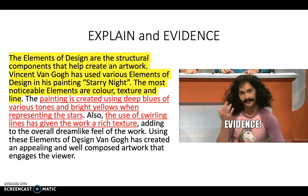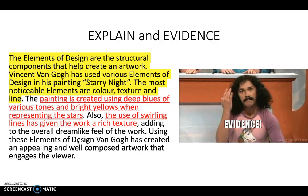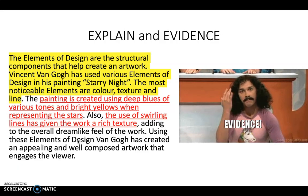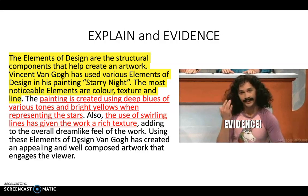Now, explain and evidence. What I've got highlighted is my topic sentence. When you're explaining, you're giving examples from the artwork and how they relate back to the question. The red parts here are my explanations, evidence, or evaluations, depending on which paragraphing tool you're using. For example: 'The painting is created using deep blues of various tones and bright yellows when representing the stars.' That's an example of how Van Gogh has used colour.